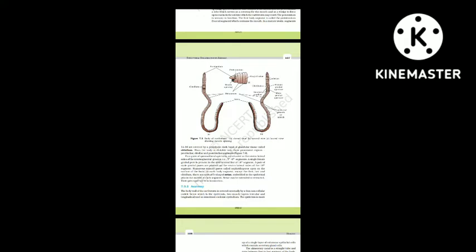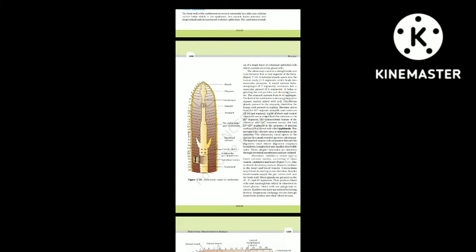Section 7.3.2: Anatomy. The body wall of the earthworm is covered externally by a thin non-cellular cuticle, below which is the epidermis, two muscle layers (circular and longitudinal) and an innermost coelomic epithelium. The epidermis is made up of a single layer of columnar epithelial cells containing secretory gland cells. The alimentary canal is a straight tube running from the first to the last segment. A terminal mouth opens into the buccal cavity (segments 1-3), leading into a muscular pharynx, followed by a narrow esophagus (segments 5-7).